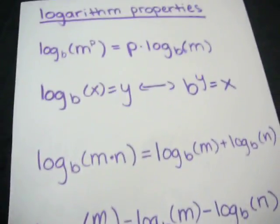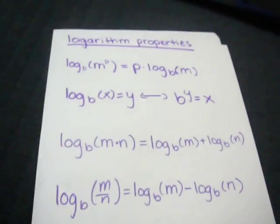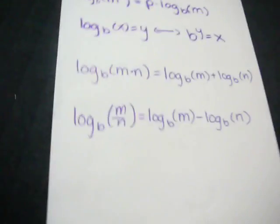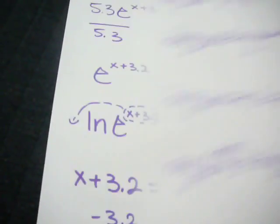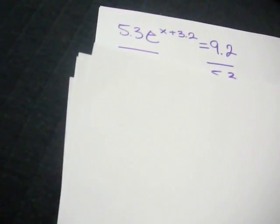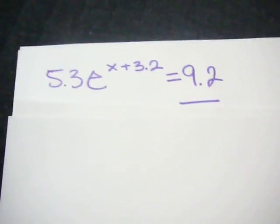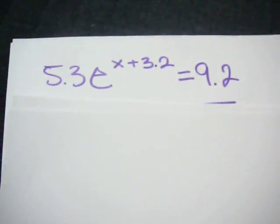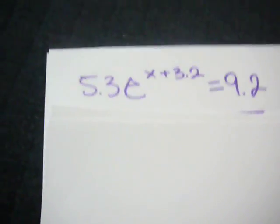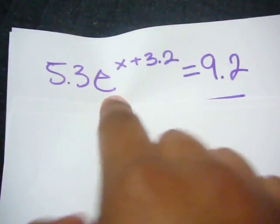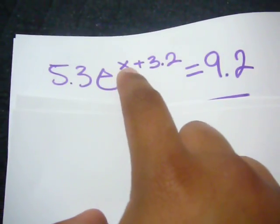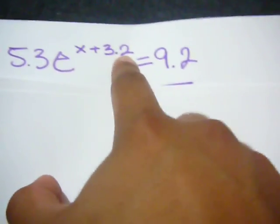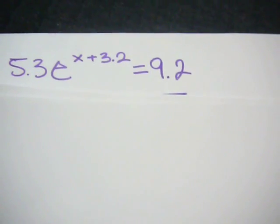Now that I've gone over the properties, it's time to put them to use with a problem. We're going to start out simple with 5.3 times e to the power of x plus 3.2 is equal to 9.2.